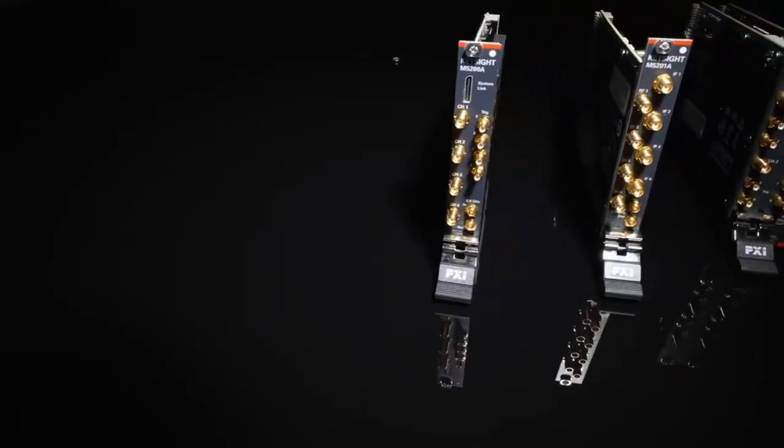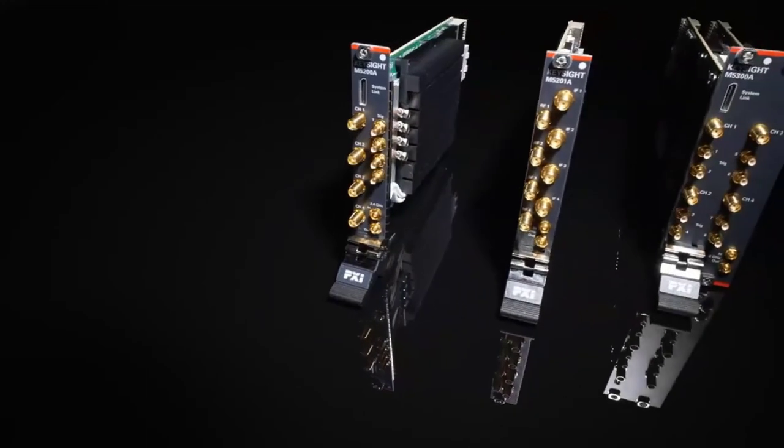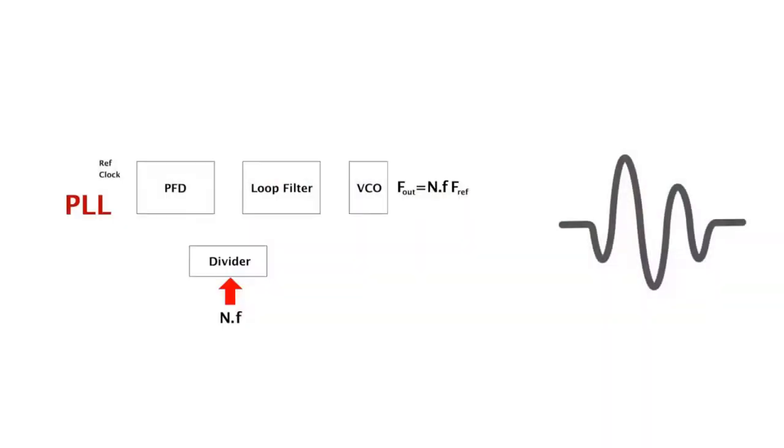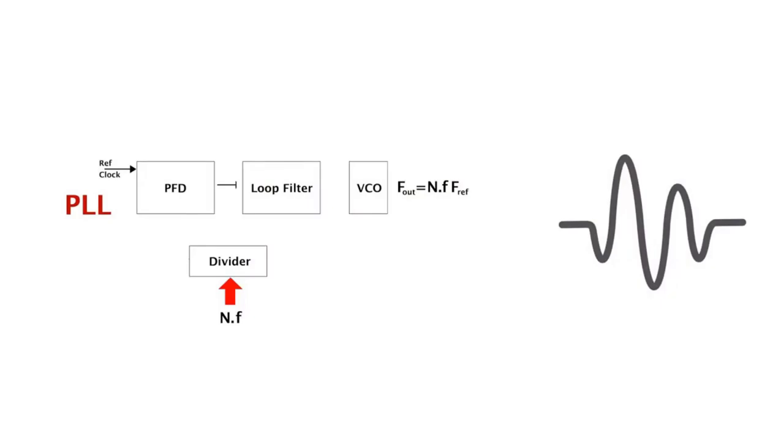Finally, the phase noise performance of the output signal rivals that of some of Keysight's flagship signal generators, such as the PSG. Why is this the case? Most analog generators use PLL in their clocking mechanism, and that leads to a characteristic knee bend in the phase noise in the hundreds of megahertz.